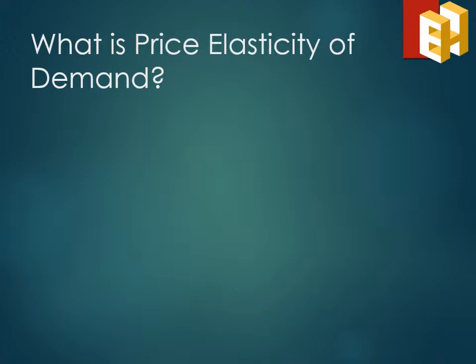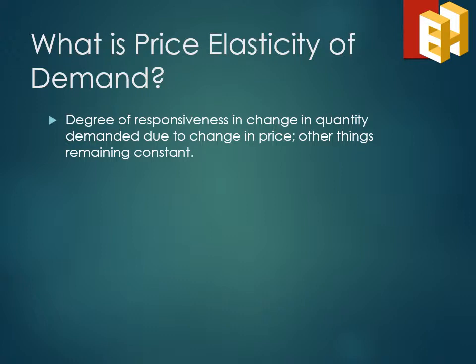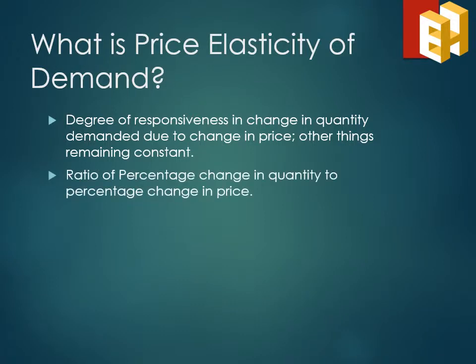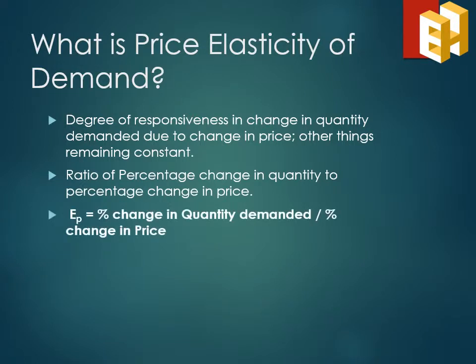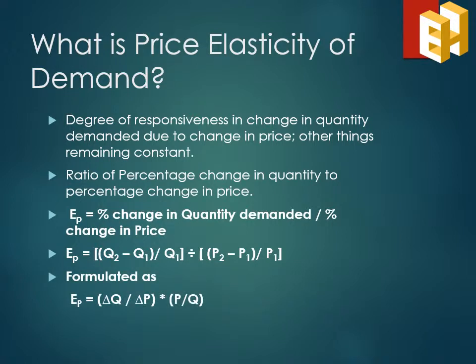The first kind of elasticity of demand is the price elasticity of demand. It is the degree of responsiveness in the change in the quantity demanded due to change in price while keeping other factors constant. Therefore, it can be formulated as the ratio of percentage change in quantity to the percentage change in price. In numerical terms, it is (Q2 - Q1) / Q1, the whole divided by (P2 - P1) / P1. On solving further, we get price elasticity of demand as (ΔQ / ΔP) multiplied by (P / Q).